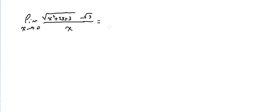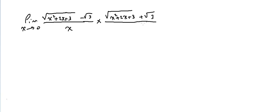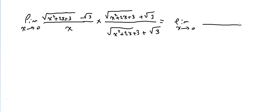Since we have radical minus radical in the numerator, we multiply numerator and denominator by the conjugate of the numerator — we are rationalizing the numerator. The conjugate is [√(x²+2x+3) + √3]. Using (a-b)(a+b) = a²-b², we get limit as x→0 of [(x²+2x+3) - 3] over [x(√(x²+2x+3) + √3)].